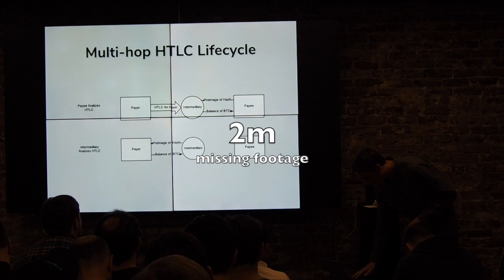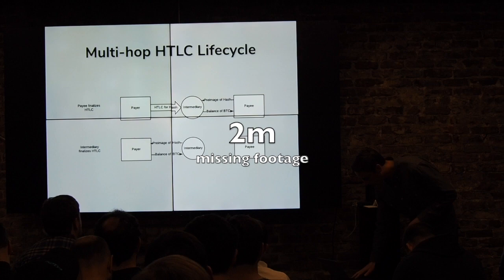The lifecycle that a Lightning invoice goes through basically mimics this. You would create an invoice, get the Bolt 11 back, an HTLC would come into your Lightning node, and then you'd get BTC balance. The normal way it works is your node would automatically look for the hash that corresponds to this invoice, look up the pre-image, and then just settle it automatically on your behalf. The alternative is your Lightning node looks up the hash, there is no pre-image, no invoice associated with it — it just cancels the HTLC backwards. But there's a new feature which I call delayed invoice settlement, which I think is really powerful and allows a bunch of new applications.